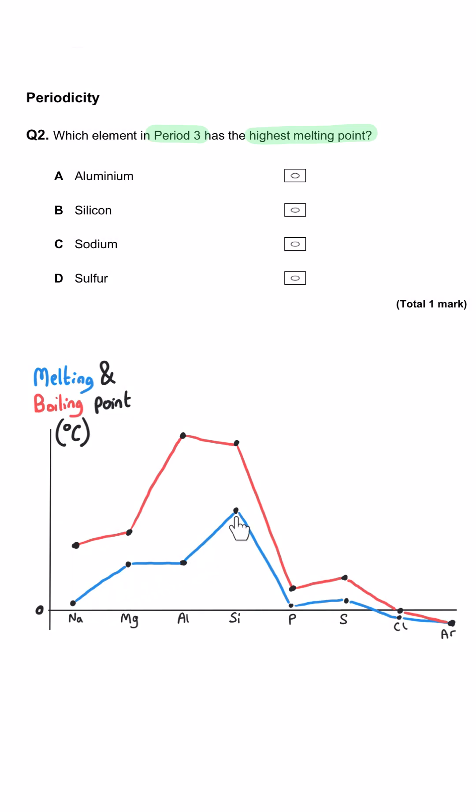And you can see that the one with the highest melting point is silicon, and we just need to check that silicon is one of the options, and it is. It's option B. So B is the correct answer.